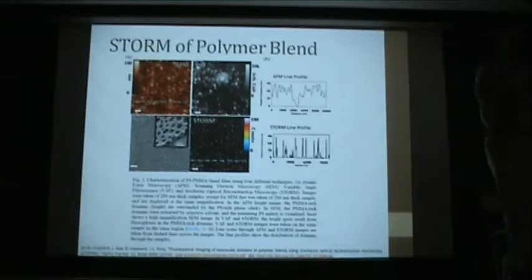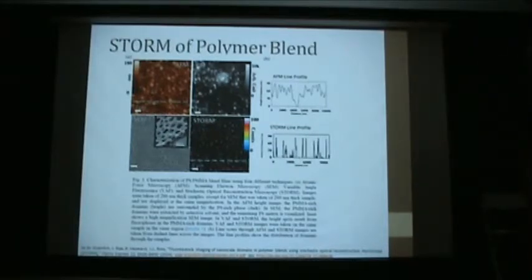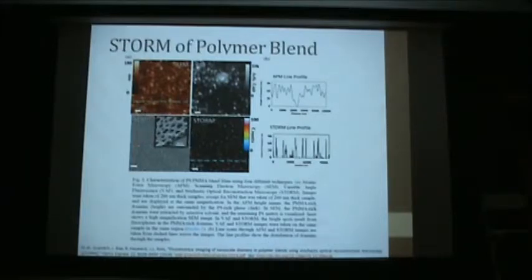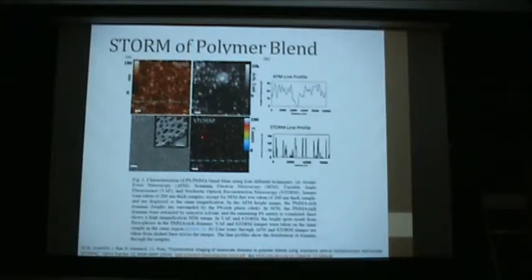STORM is not exclusively limited to biology. Here's an example looking at a polymer blend — polystyrene/polymethylmethacrylate — where the PMMA has been fluorescently labeled. The STORM image is compared to an AFM image, a variable-angle fluorescence image, and an SEM image, with all scale bars at one micron. STORM is directly comparable to AFM and SEM. In the SEM the PMMA was selectively dissolved showing voids; in the AFM the PMMA sits slightly higher so it appears bright. All techniques reveal the nano-domains of the polymer blend.